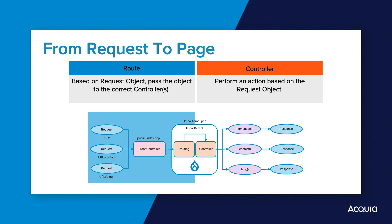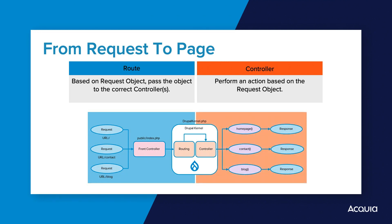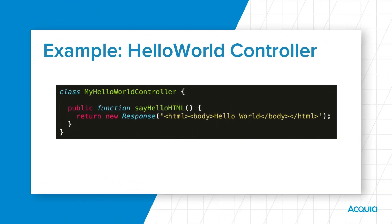Although it is request and response objects that flow through the Drupal kernel, it's the routing component and controllers of the kernel that are doing the important work. The routing component is responsible for handling each incoming request and figuring out what to do with it. Incoming requests are interpreted by the routing component and then passed to a PHP function responsible for handling the request — those PHP functions are called controllers. They receive a request object and generate an appropriate response object.